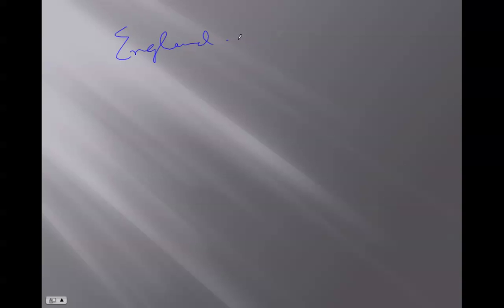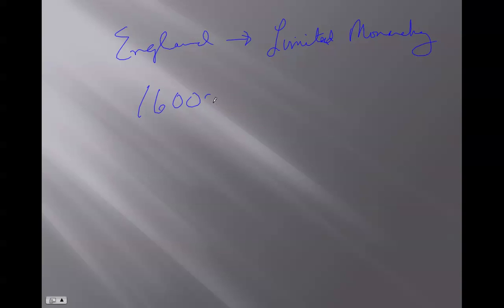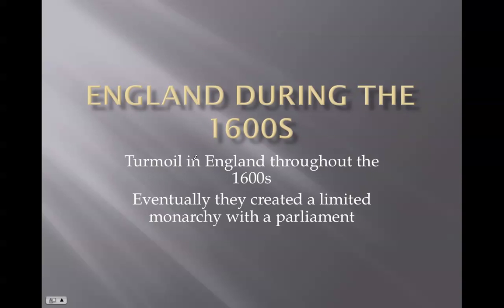What was going on in England is that England developed what we call a limited monarchy. In the 1600s, England was in turmoil — and that's something easy to remember.